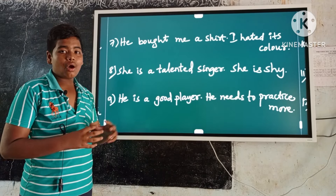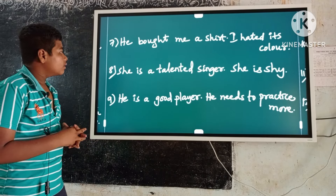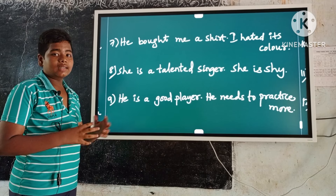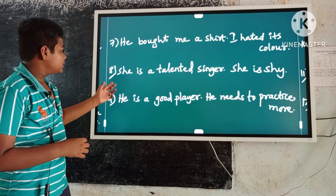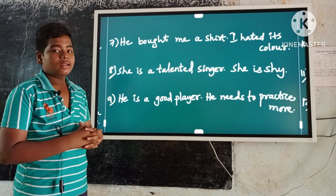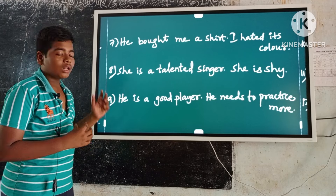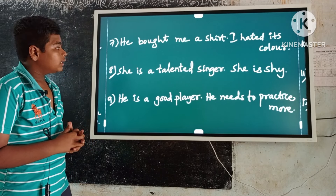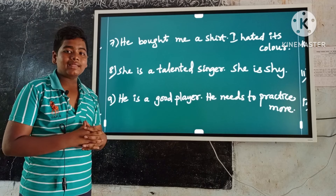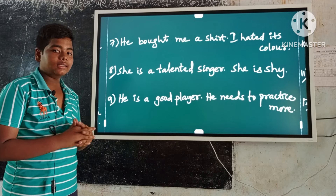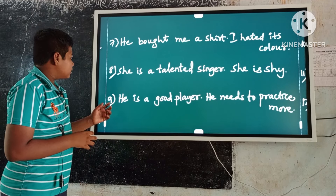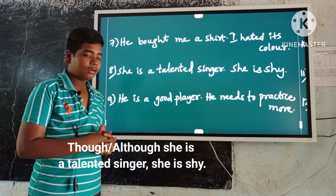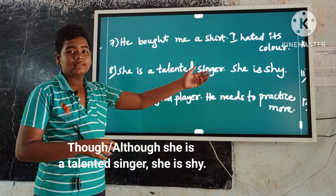Example number eight: She is a talented singer. She is shy. These are contrast ideas. Here the first occurring sentence is 'she is a talented singer.' Keep though or although before it, and a comma before the second sentence. So the answer is: Though or although she is a talented singer, she is shy.